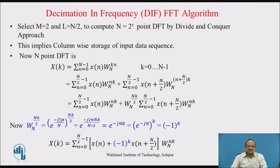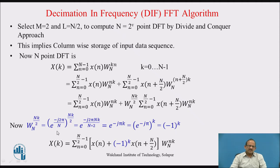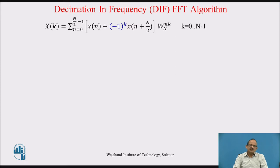So X(k) can now be represented as a summation with the same limits, taking common terms: the first part is x(n), the second part is minus 1 raised to k times x(n + N/2), multiplied by the common factor W_N^(kn). This DFT can now be written using this equation for k equal to 0 to N minus 1, giving N total points. In the next step, let us divide X(k) into two parts: one with all even-numbered samples X(k) and odd-numbered samples X(k).